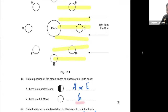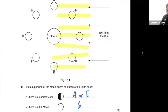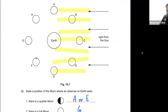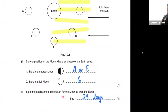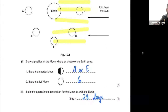From position G onwards, we see progressively less of the moon: a gibbous shape, then a quarter, then a crescent, then back to a new moon. The time for the moon to orbit the earth is approximately one month — 27, 28, or 30 days are all acceptable answers.